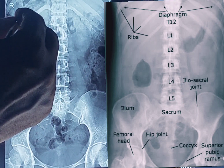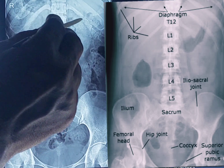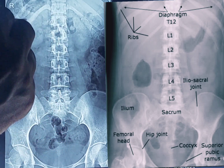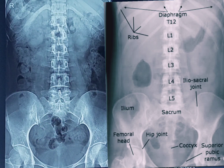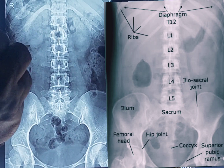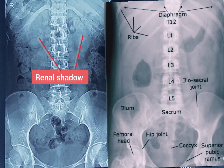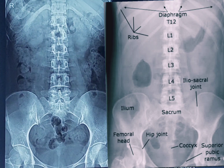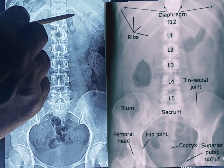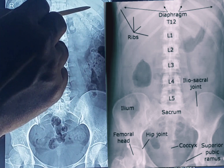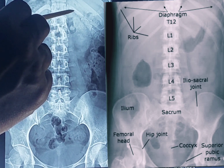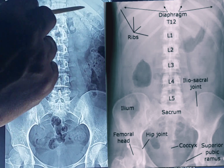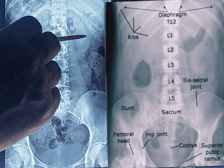Then, what is this shadow? Can you see this shadow on both sides? This shadow is less dense due to its lower radiographic density. This shadow is the renal shadow, or shadow of the kidney. The ribs are related to the kidney on its posterior side. On the left side, the eleventh and twelfth ribs are related to the posterior surface of the left kidney. So both of these are the renal shadows.